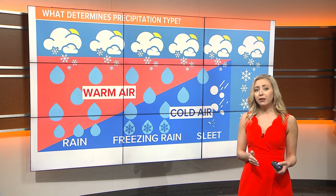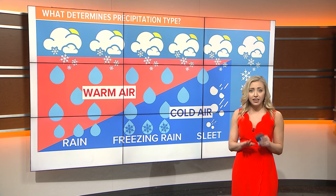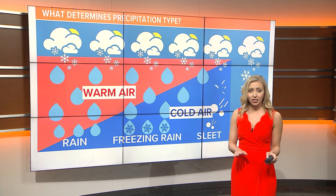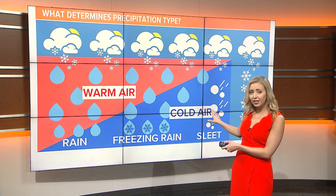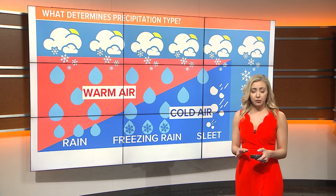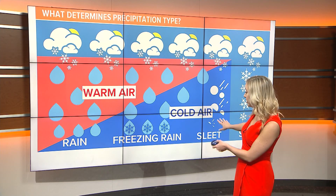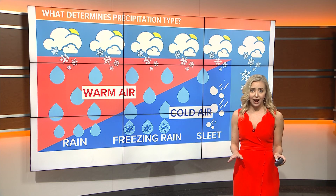Now if that droplet falls through warm air first, then hits a layer of very cold air at the surface, it can become freezing rain. The drop would begin as ice, then turn to rain, then freeze on contact with very cold ground.